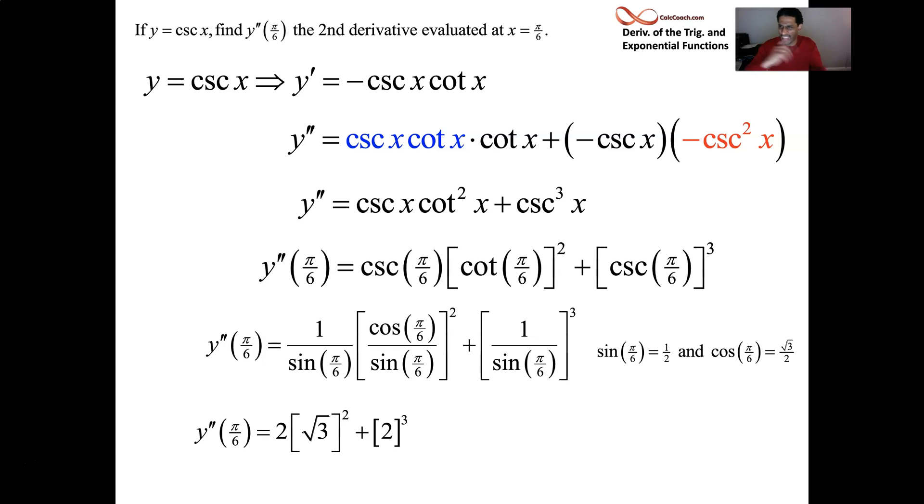Well, 1 divided by a half is a 2. We have a root 3 over 2 for the numerator. There are some steps that are definitely skipped here, sorry about that. And then a 1 half for the denominator. And so what happens is those 2's cancel out, then you just end up with root 3, which you have to square. And then the other term is just a 2, because it's 1 over a half again, but that 2 is cubed though. So you end up with a nice integer value for the second derivative. Root 3 squared is a 3, so 6 plus the 8, 14. That was interesting how that worked out. Unexpected to have such a nice integer answer like that.